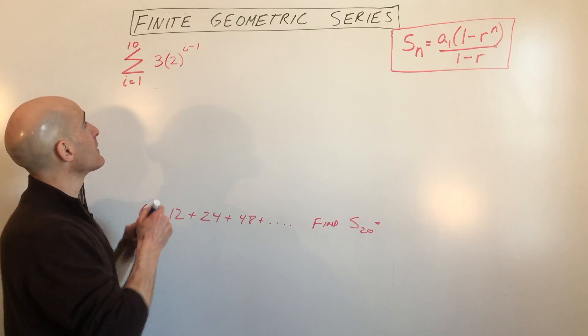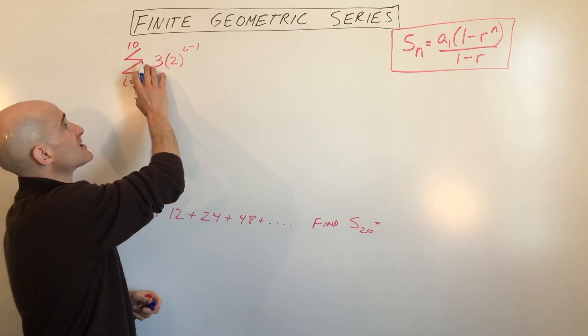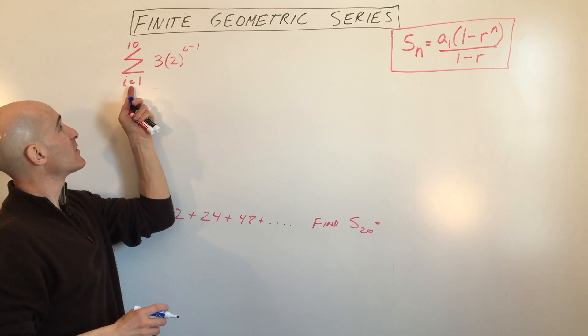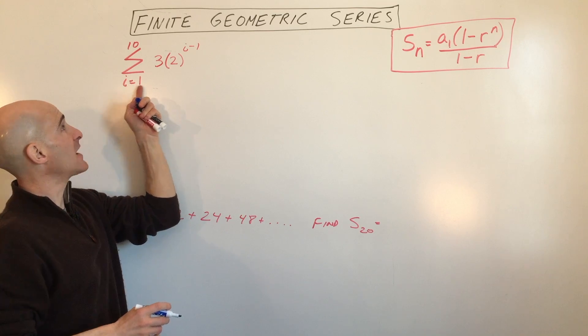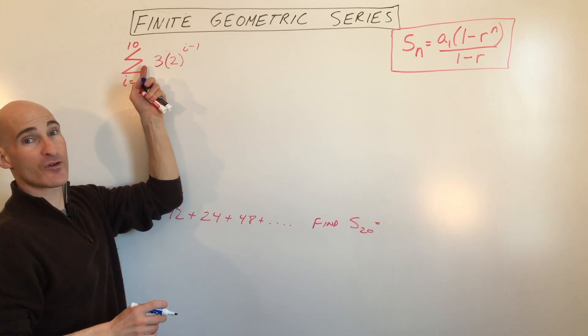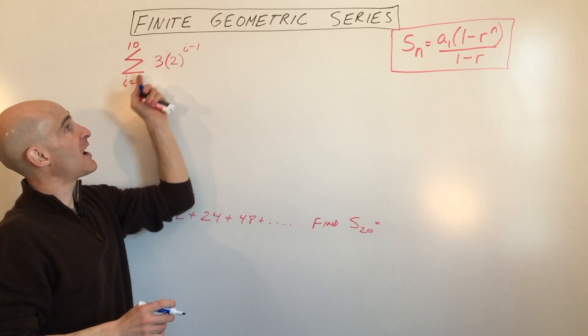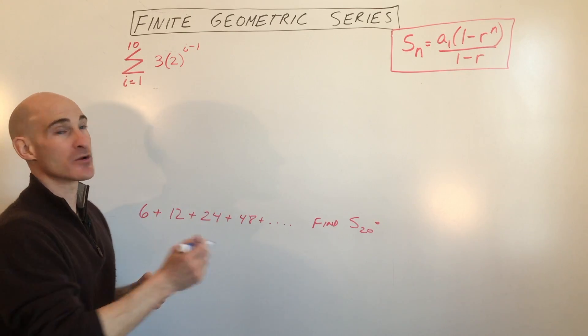Let's look at this first example here. We talked about how to work with this sigma notation before in a previous video when we talked about arithmetic series, but basically what you do is you start with this bottom index, which is i equals 1, and you work your way up 2, 3, 4, 5, 6, 7, 8, 9, 10. You put in 1 for i, 2 for i, 3 for i, all the way up to 10. The sigma just means that you're summing up all those terms.